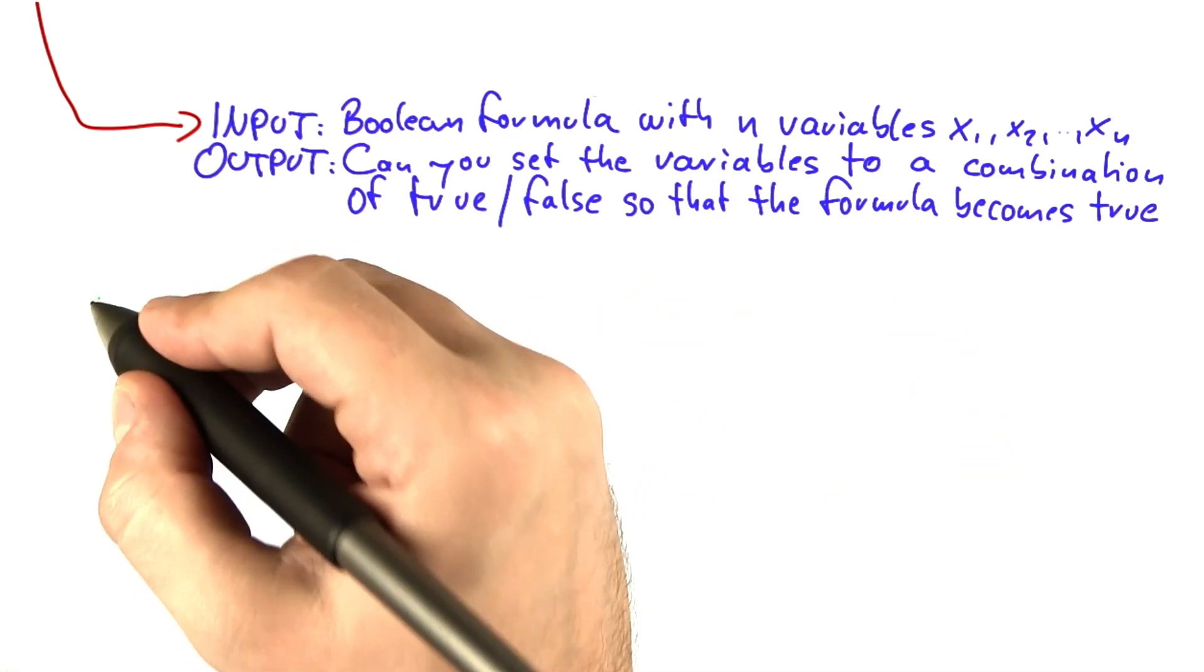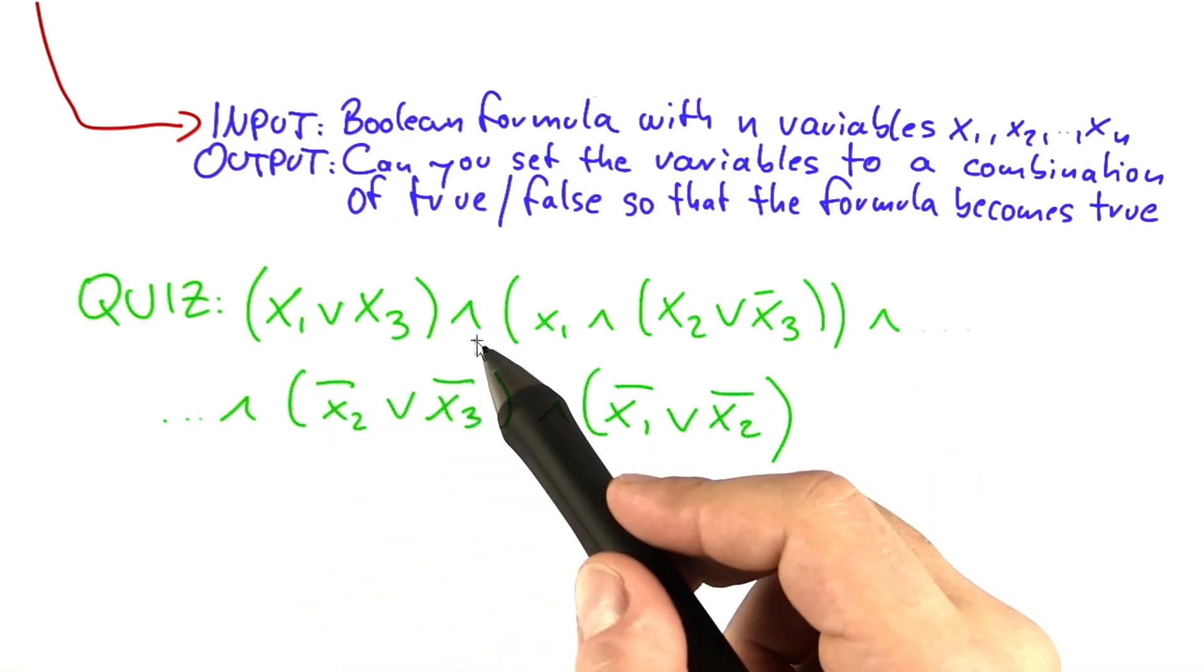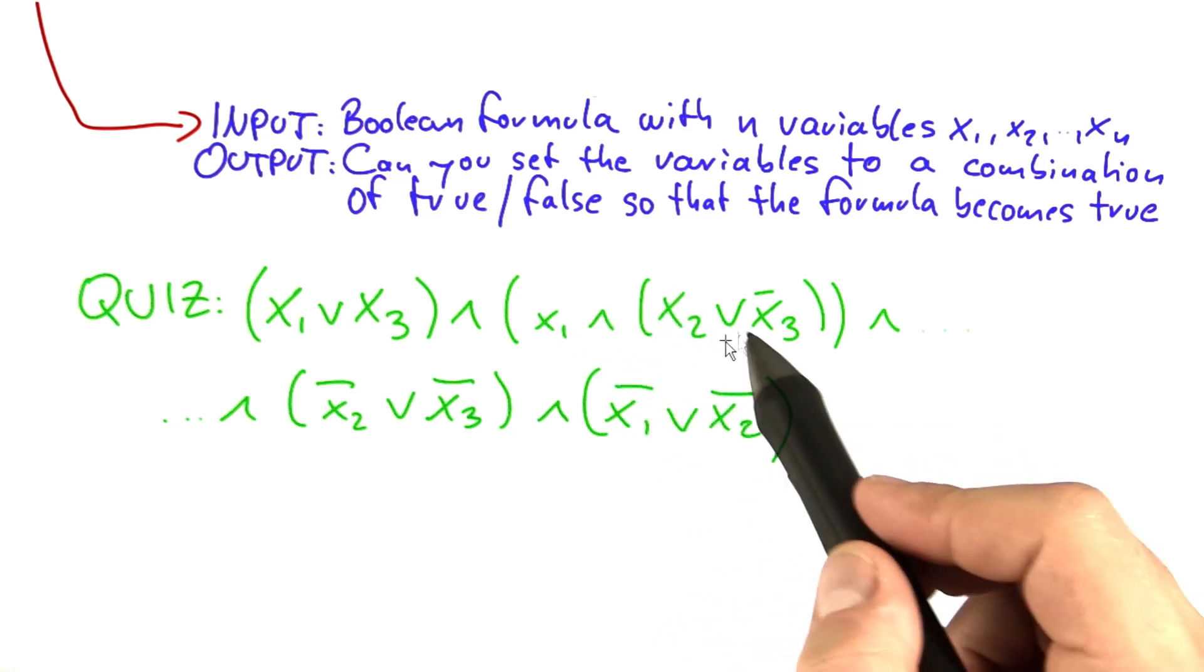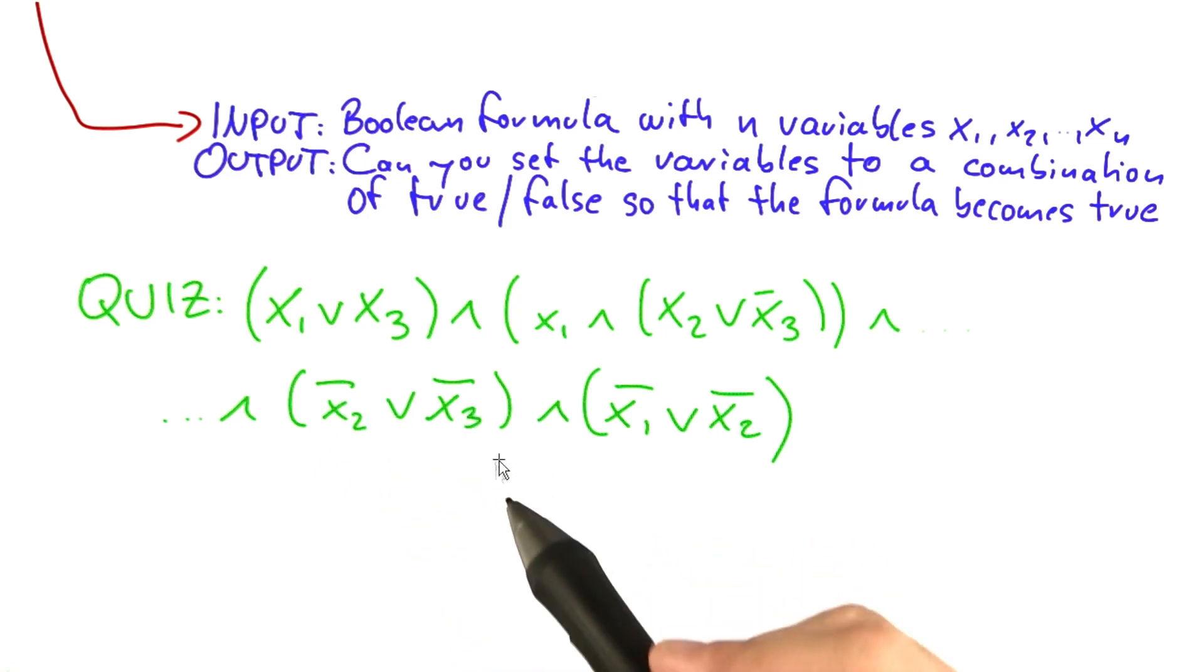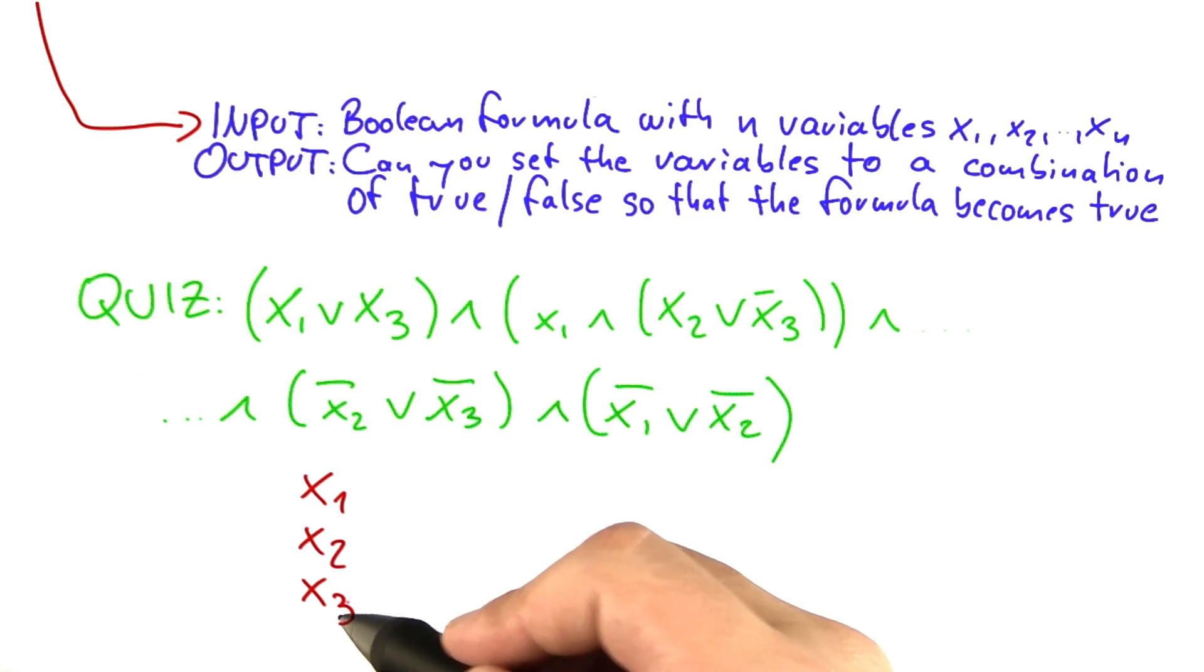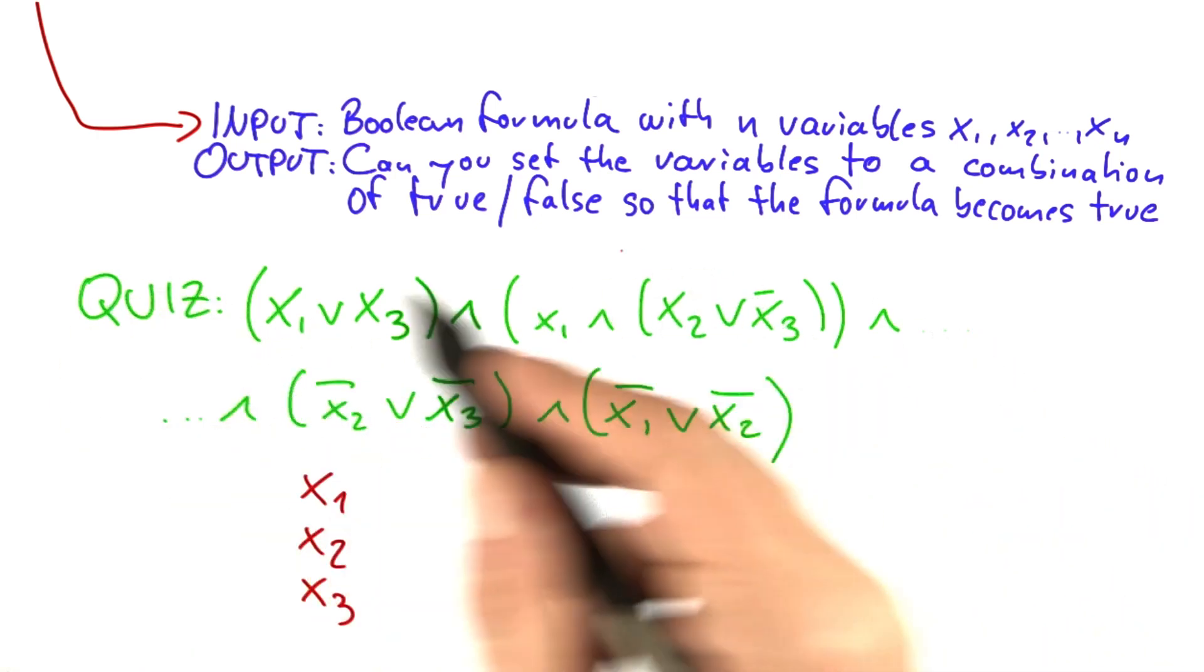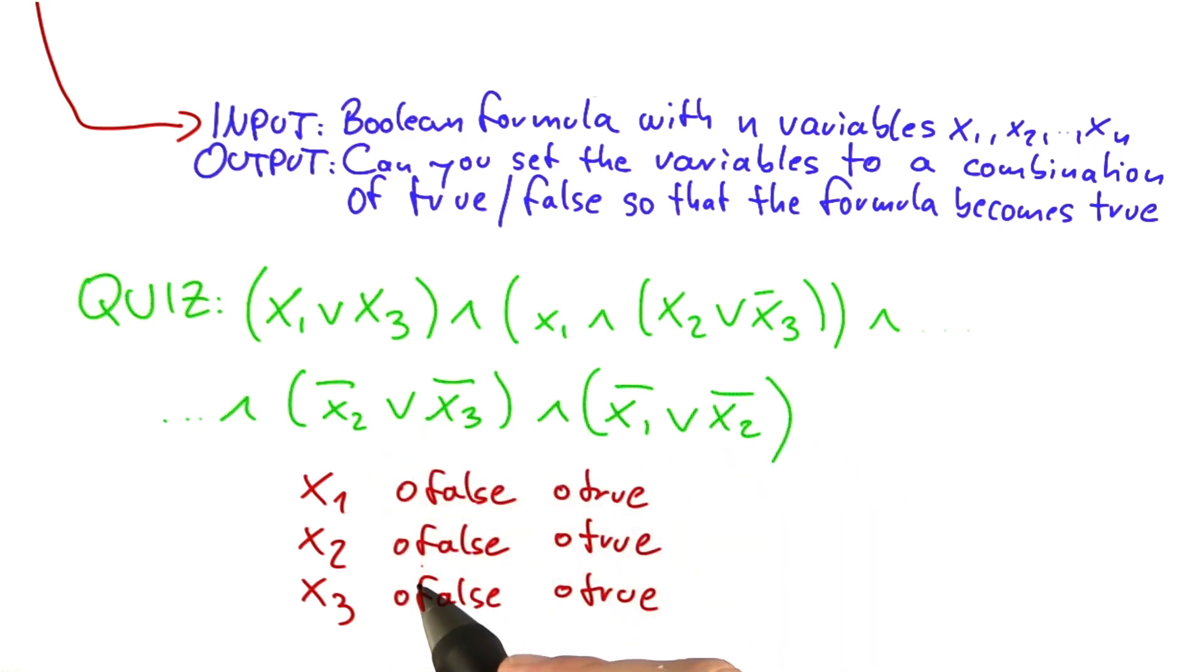So now let's see if you can figure out an even more challenging example yourself. Here's our Boolean formula x1 or x3, and x1 and x2 or not x3. And the formula continues here, not x2 or not x3, and not x1 or not x2. And I'm going to reveal to you that this formula indeed has an assignment of true and false to the variables x1, x2, and x3, so that the whole formula is satisfied, meaning it evaluates to true. What I want to know from you is how I have to set the variables to do this. If I should set x1 to false, please check here. If I should set it to true, please check here. And the same thing for the variables x2 and x3.